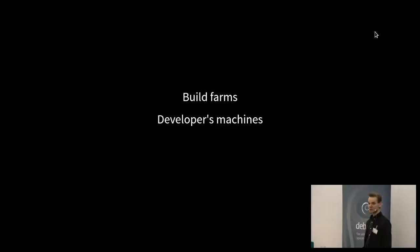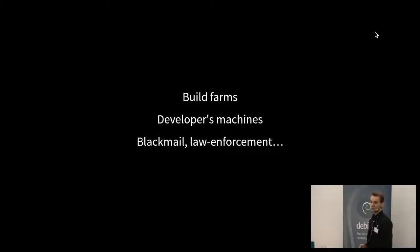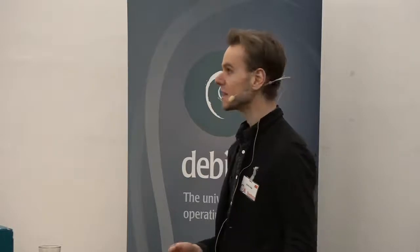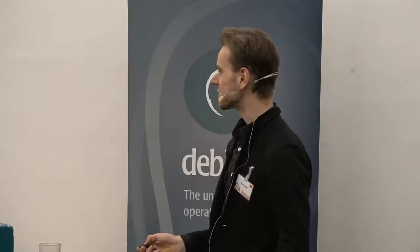You can also target individual developers' machines — add a little backdoor to every piece of software, every binary they give to friends, stealing bitcoins or whatever. You can also turn up at someone's door and blackmail them into producing software with extra 'features' that don't exist in the source code. They'd release their source, but the binaries would have a backdoor that someone's forcing them to produce.